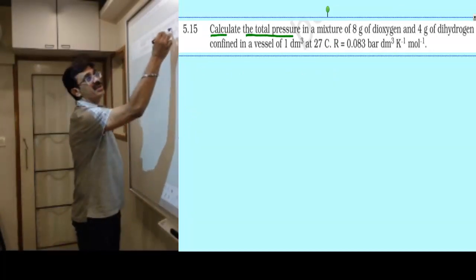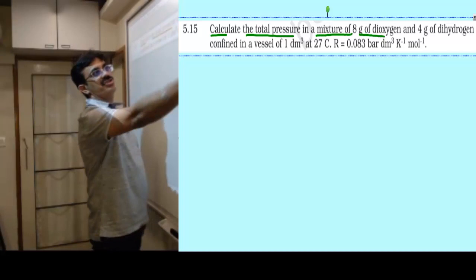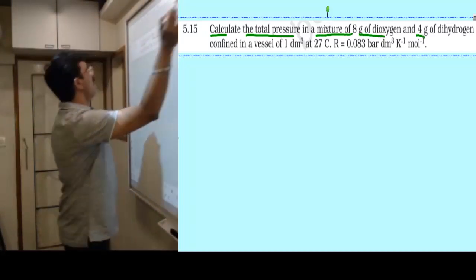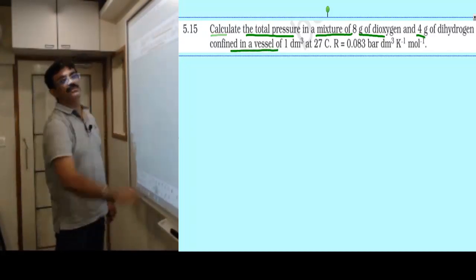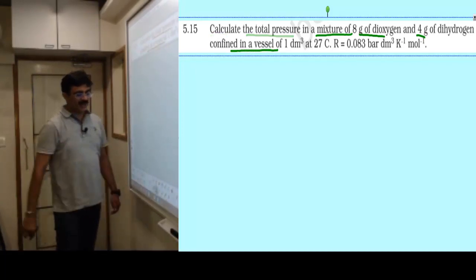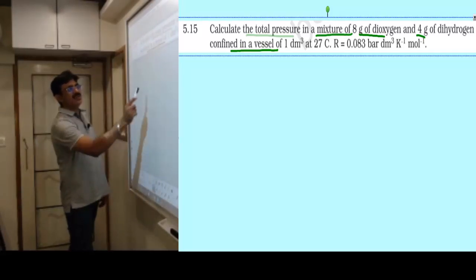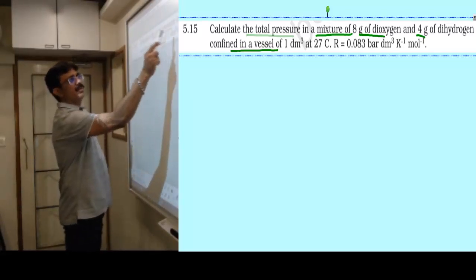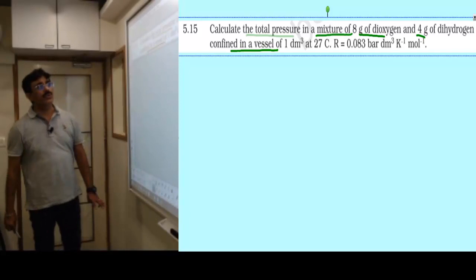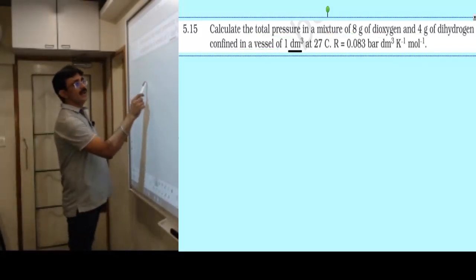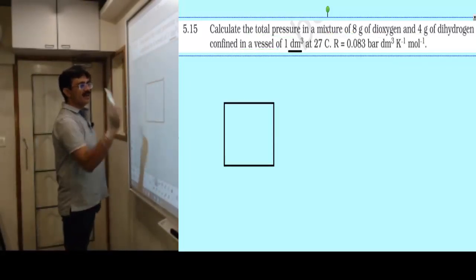Question says: calculate the total pressure in a mixture of 8 gram dioxygen and 4 gram dihydrogen confined in a vessel. They have a container of 1 liter - 1 decimeter cube, which equals 1 liter. Inside they have hydrogen gas and dioxygen gas combined.